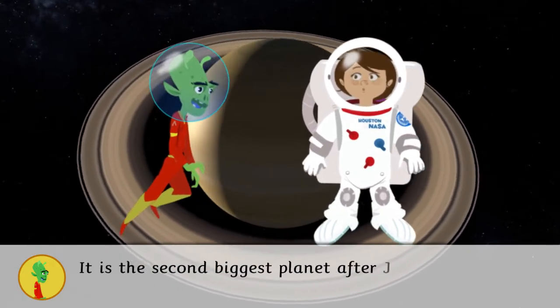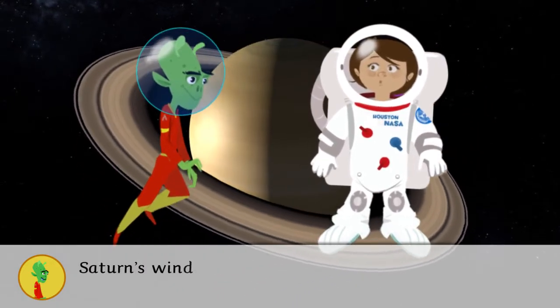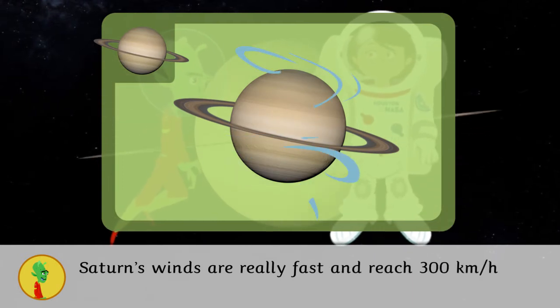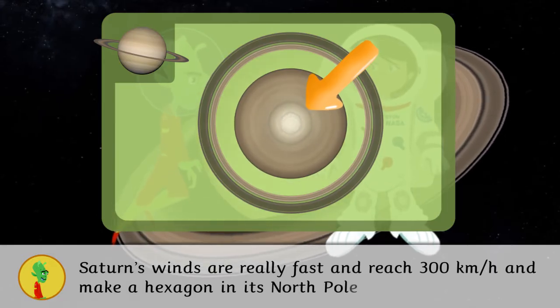It is the second biggest planet after Jupiter. Saturn's winds are really fast and reach 300 kilometers per hour and make a hexagon in its north pole.